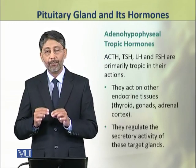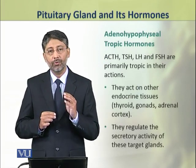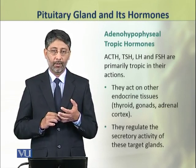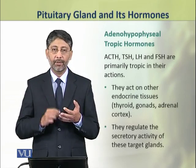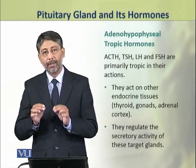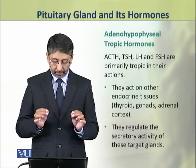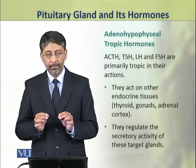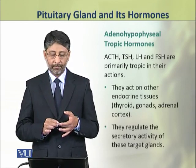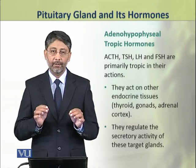These adenohypophyseal hormones are classified into 2 groups. First, the tropic hormones — ACTH, TSH, LH, and FSH are primarily tropic in their actions. They act on other endocrine tissues, i.e., thyroid, gonads, and adrenal cortex, and regulate the activity of these target glands.